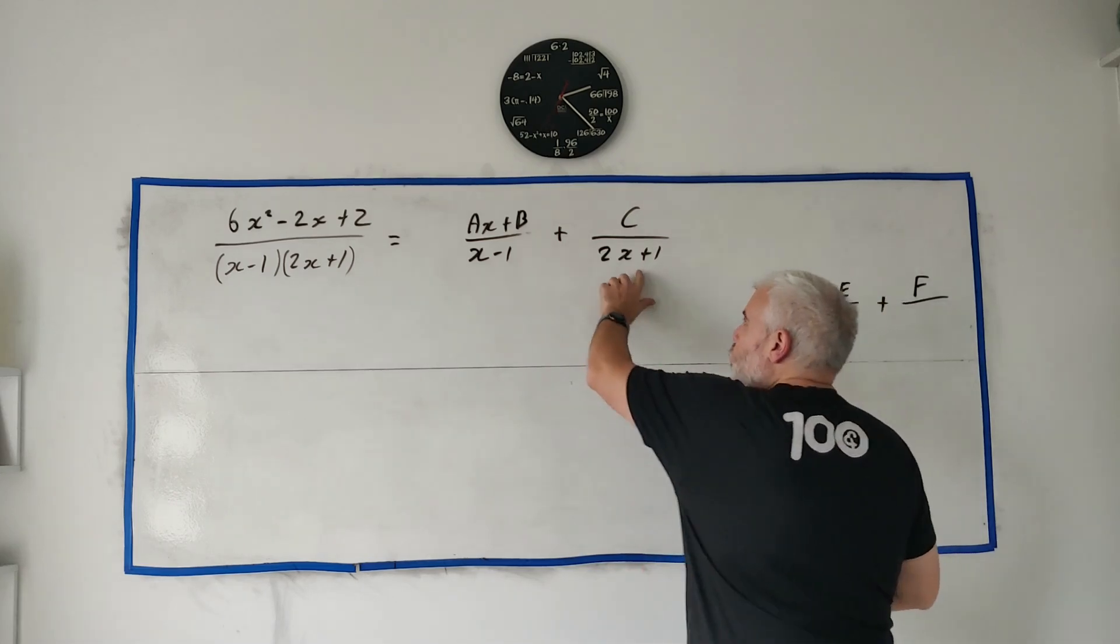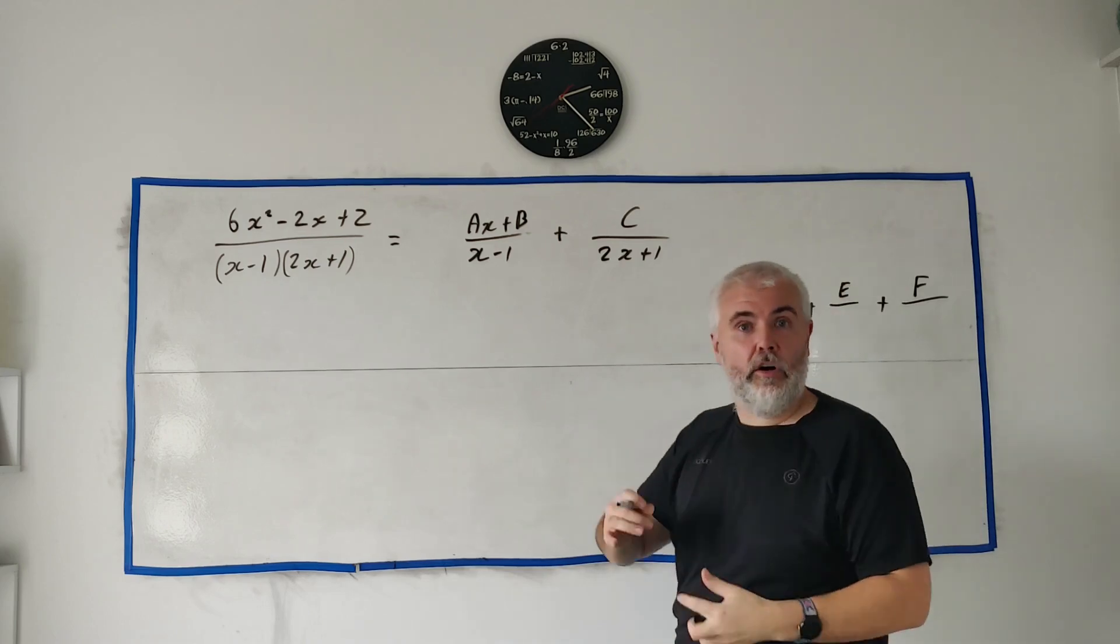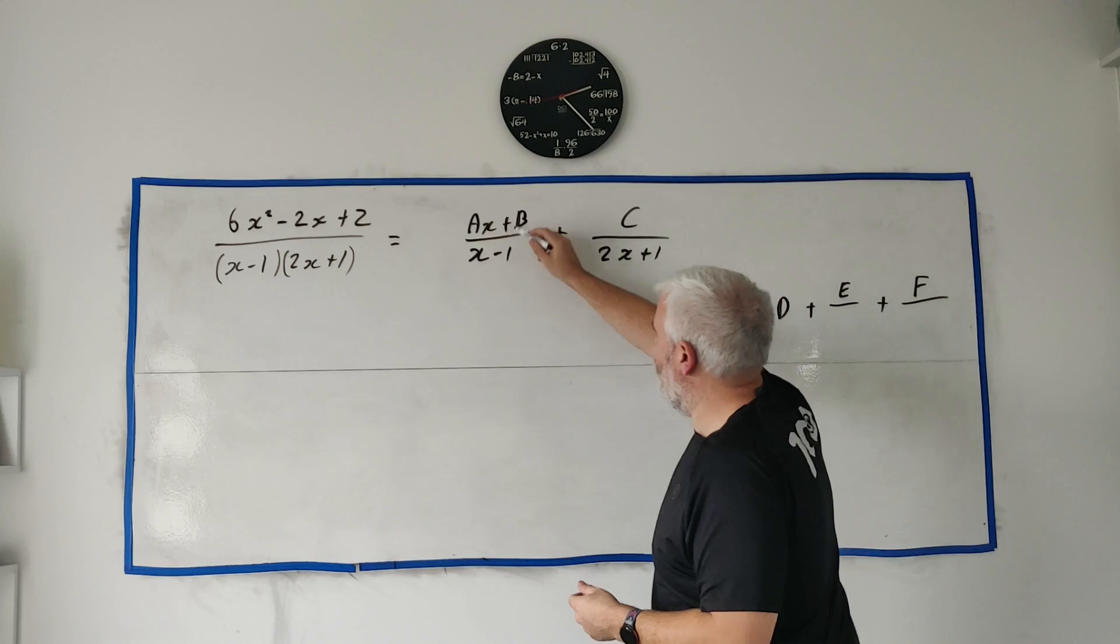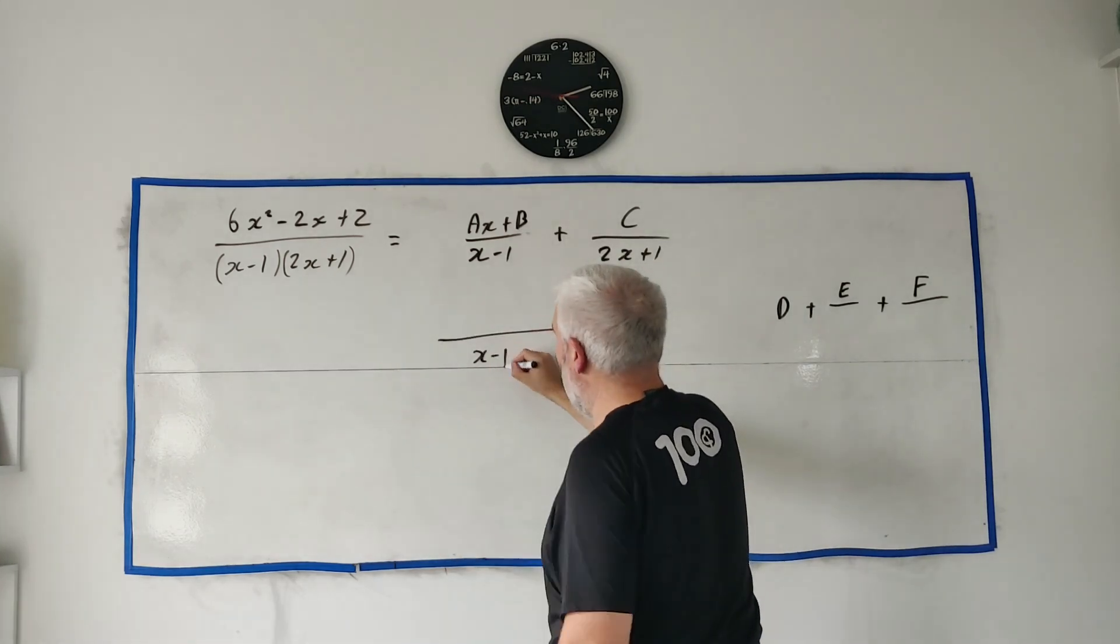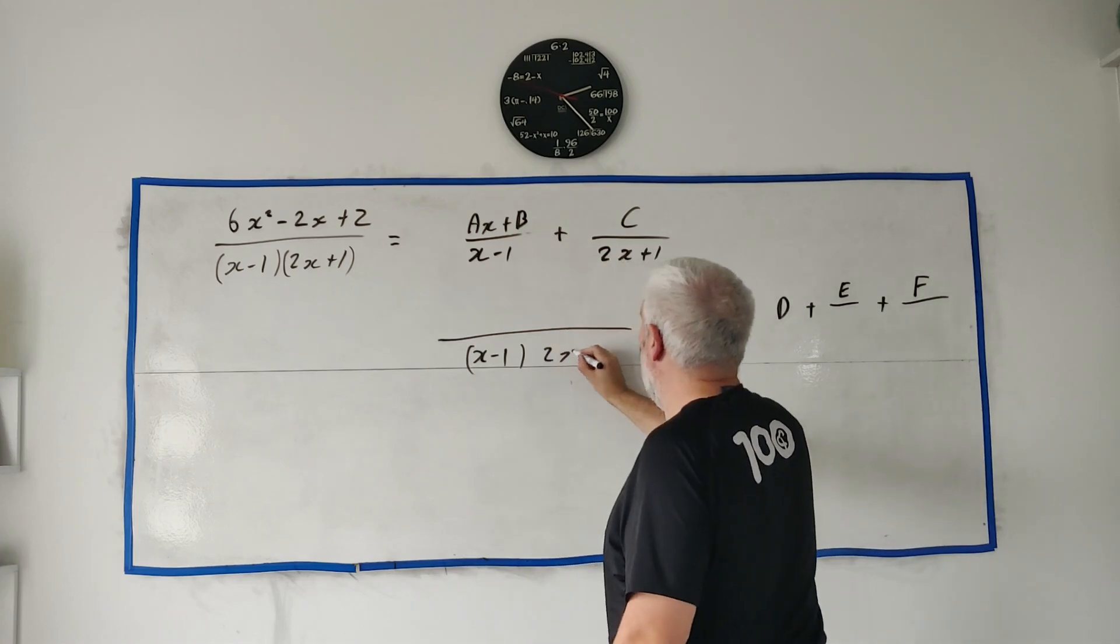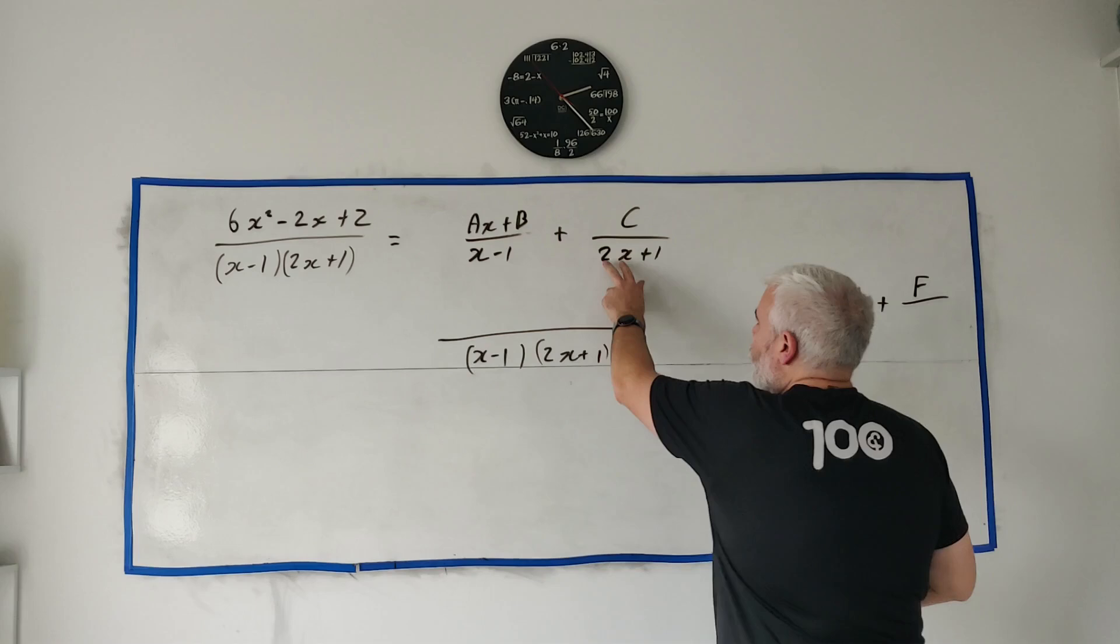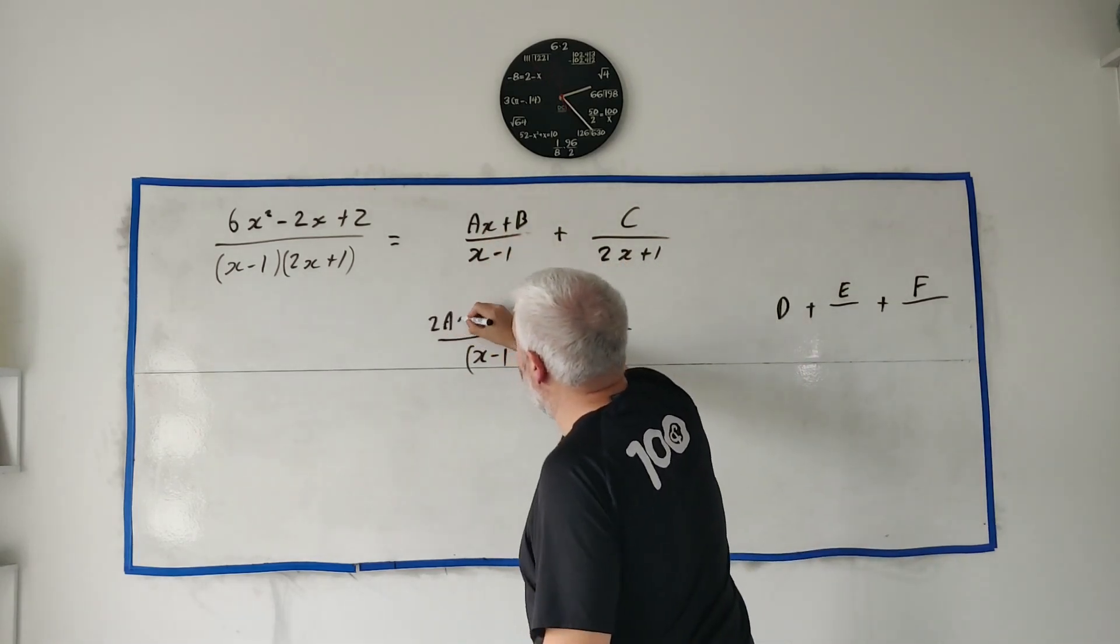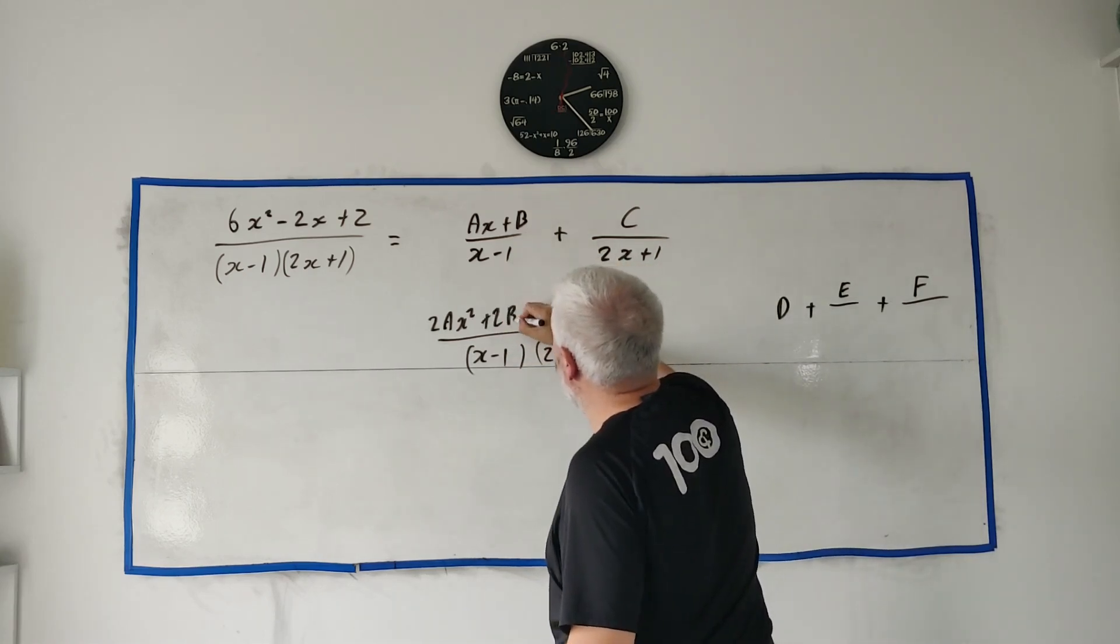Again I'll show you this answer at the end but I'll continue on this method. So if we cross multiply this as I was saying we then just equate all the x squares all the x's all the numbers. Think about cross multiplying here. The bottom row, let me do that here, the bottom row will just get back to where we were, 2x plus 1 times x minus 1.